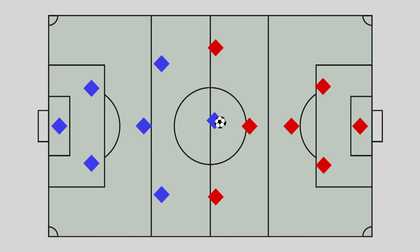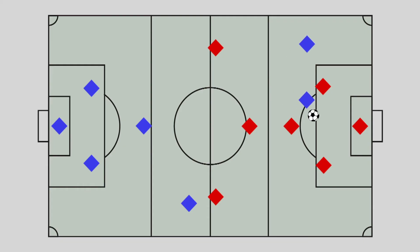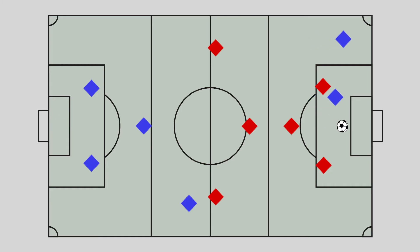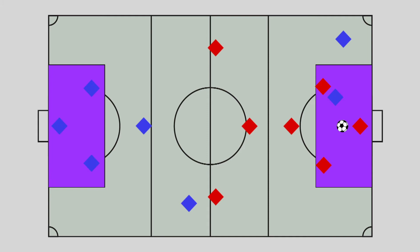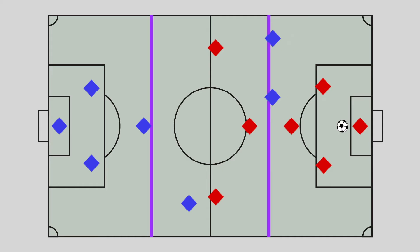Soccer is played without using hands. Players may not touch the ball with their hands or arms, and they may not touch other players with their hands or arms. The only exception is the goalie, who can touch the ball with his hands within the penalty box. When a goalie has the ball in his hands, the opposing team must move behind the build-out line.